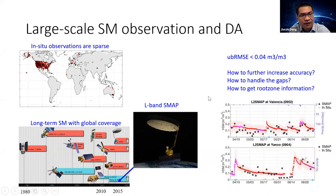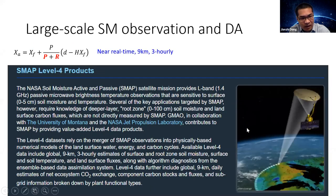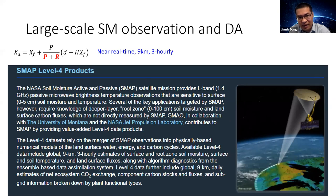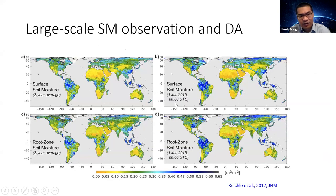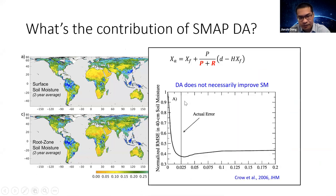Therefore, there is a Level 4 product in the SMAP mission which assimilates SMAP brightness temperature into a land surface model using the ensemble Kalman filter. This gives us a 9-kilometer spatial and temporally continuous 3-hourly soil moisture product for both the surface and the root zone. Many studies have demonstrated that this product has improved accuracy relative to the raw SMAP data and has been used widely in hydrological analysis.